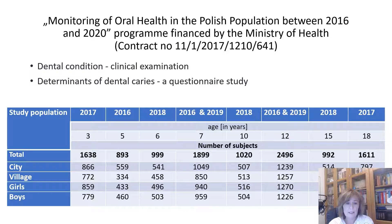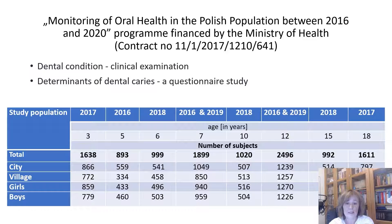Between the years 2016 and 2019, we carried out epidemiological studies in various age groups of children and adolescents. We served over 11,000 people. The studies included clinical evaluation of the dentition and questionnaire studies.